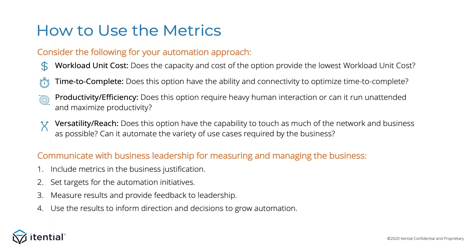The second use for the metrics is for communications with executive leadership. Teams can use this information to measure and socialize the benefits, and it can be used as a guide for future investment decisions. First, teams can use the metrics as part of their business justification to establish a model for measuring the impact of the automation solution and setting expectations. Then they can use the metrics to set targets for existing or new automation initiatives, provide an executive dashboard to keep executives informed of progress and success, and enable decision makers to make more informed decisions about the direction for future automation initiatives.